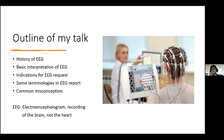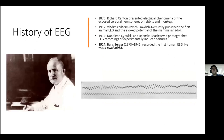EEG — electroencephalogram — is a recording of brain waves. It's not the ECG we use for heart rhythm. Regarding the history of EEG: it has been explored since 1875, when they tried to describe electrical phenomena in animal experiments, until 1924 when Dr. Hans Berger recorded the first human EEG.